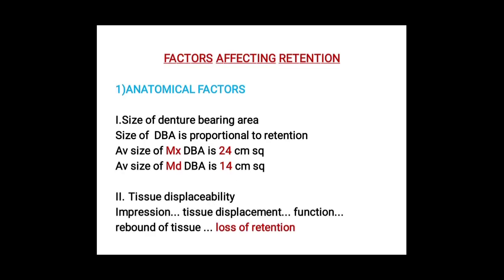Factors affecting retention — starting with anatomical factors. Size of the denture-bearing area: size is proportional to retention; more size means more retention. So we need to maximize the denture base area. The average size of the maxillary denture base area is 24 cm² and the average size of the mandibular denture base area is 14 cm² — very important to remember.